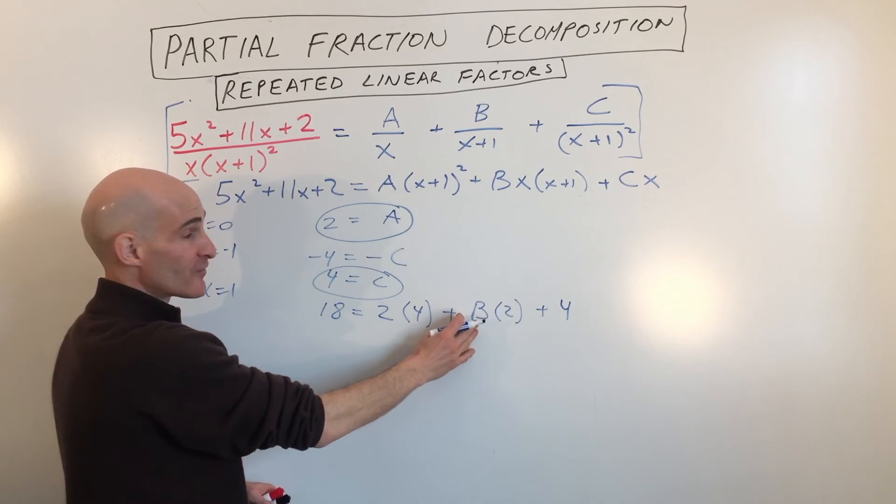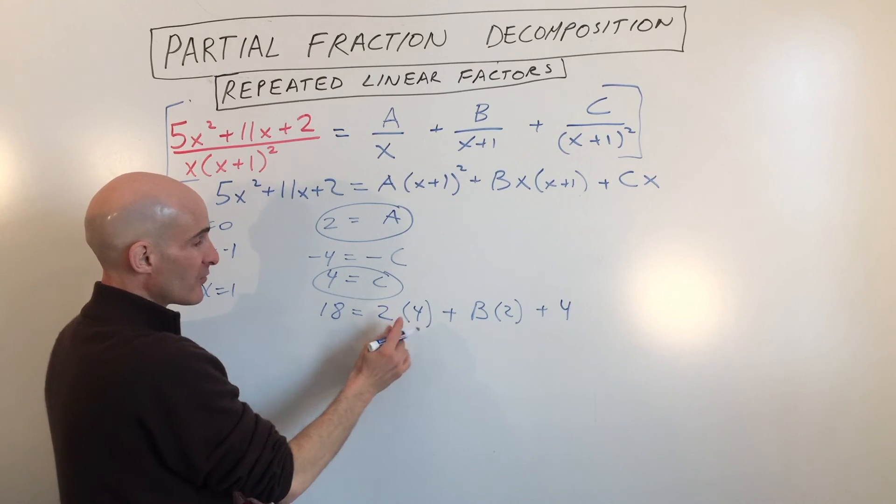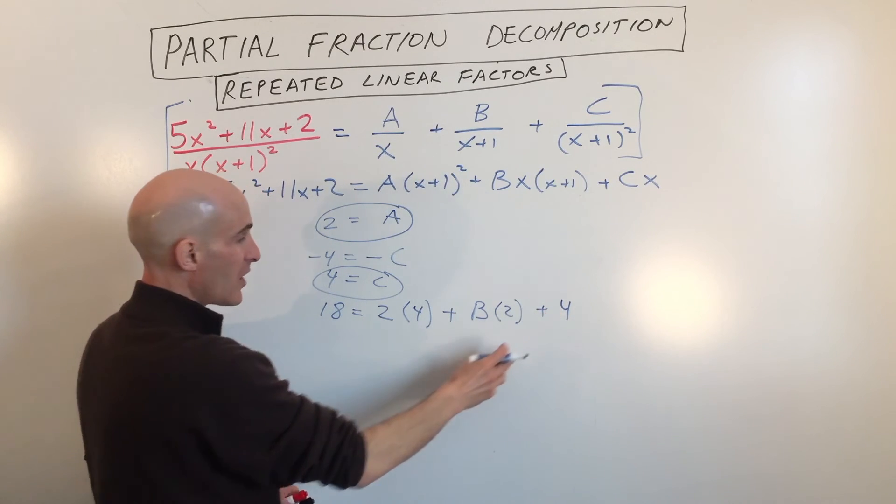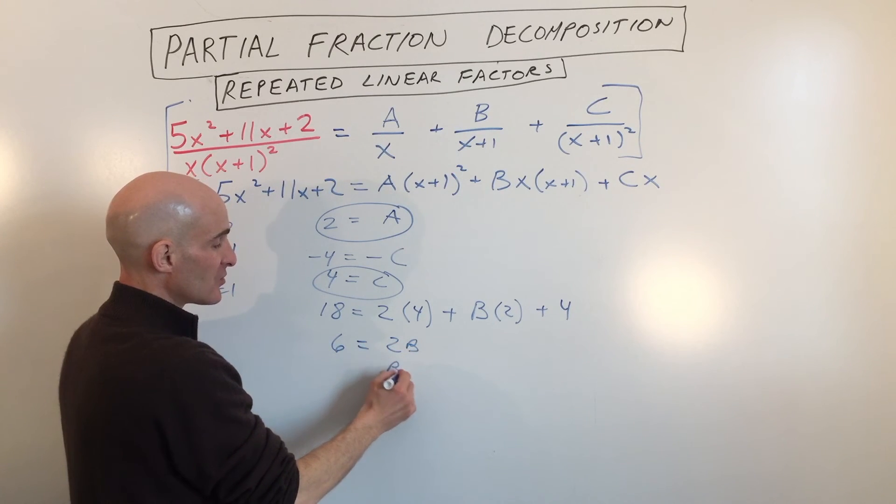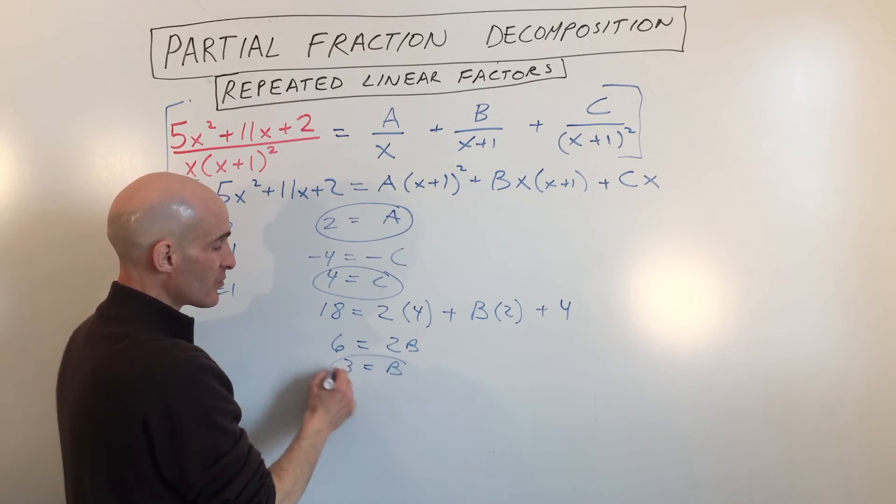Now we can solve the equation for B. So what do we have here? We've got 8 plus 4 is 12. Subtract the 12. That's going to give you 6 equals 2B. So by dividing we get B equals 3.